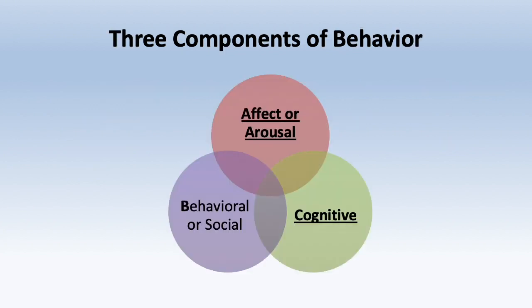There are three components of behavior, which applies to emotions as well as motivation. I like to think of this as the ABC model: A stands for affect or arousal, B stands for behavior in a social context, and C for cognitions. This applies to emotions but also to motivation in general.